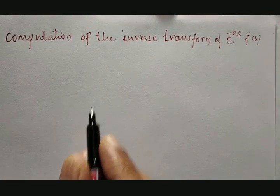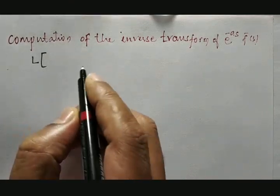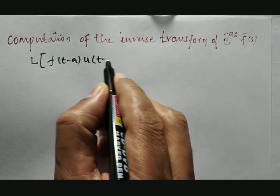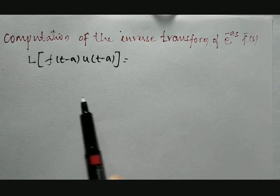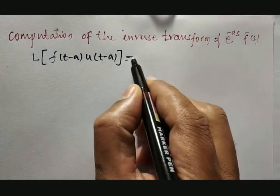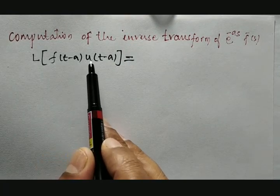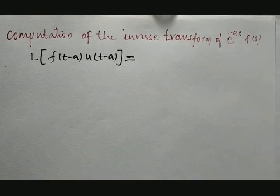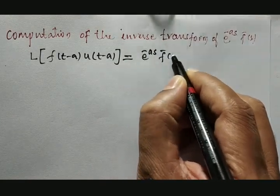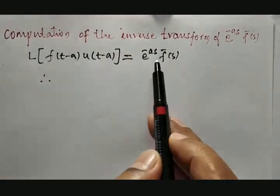We know that the Laplace transformation of f(t minus a) into u(t minus a) — where u(t minus a) indicates the unit step function — if f(t minus a) is multiplied by u(t minus a), then the result will be equal to e raised to minus as into f̄(s). This is a well known result, but we need the inverse Laplace transformation of this.